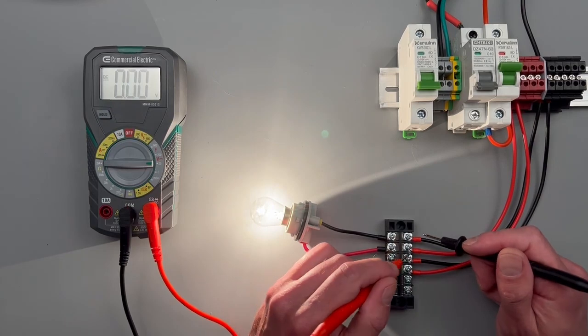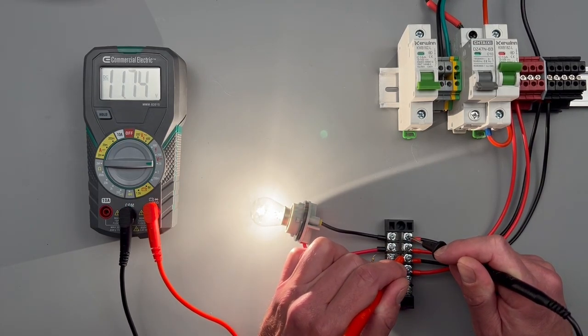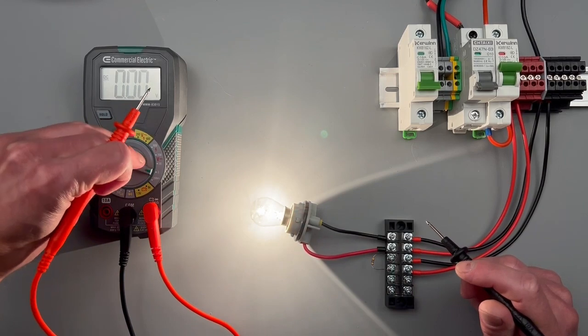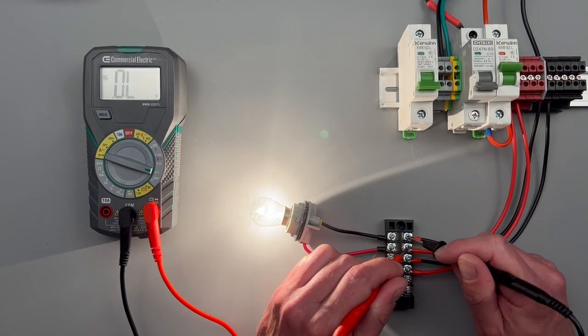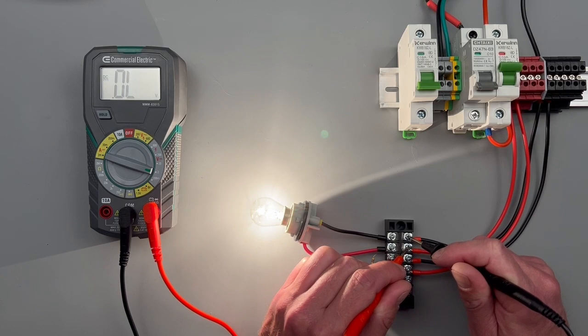Now I set it to the 20 volt. Now we have two decimal places. We're showing 11.74. However, if I go all the way down to two, it's giving me an OL. That's saying that it's out of range, and that's something to pay attention to.